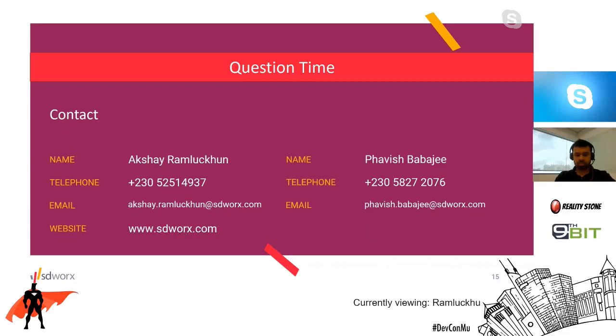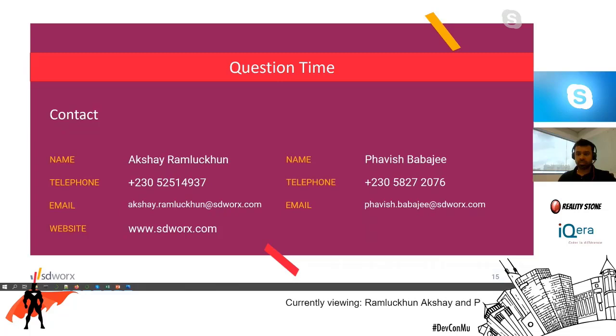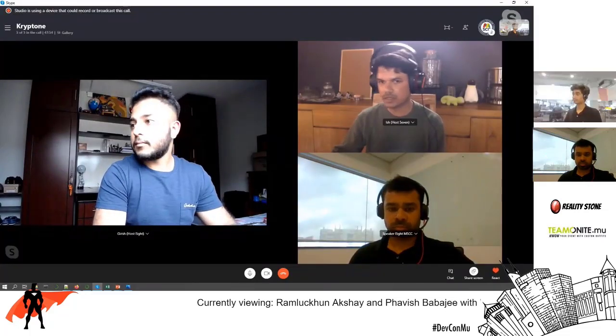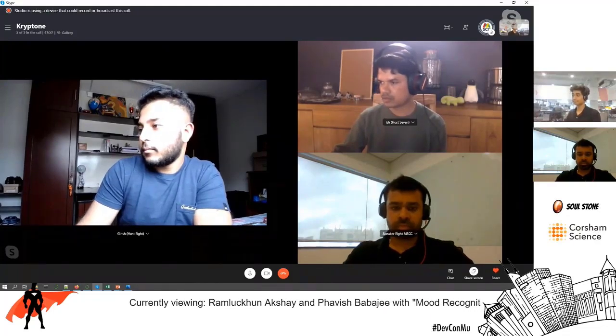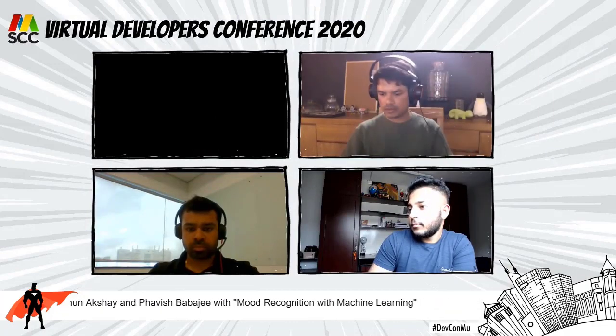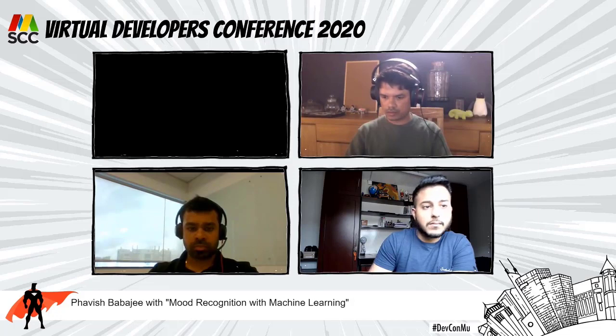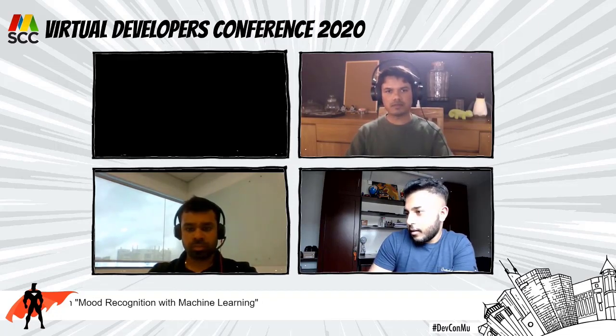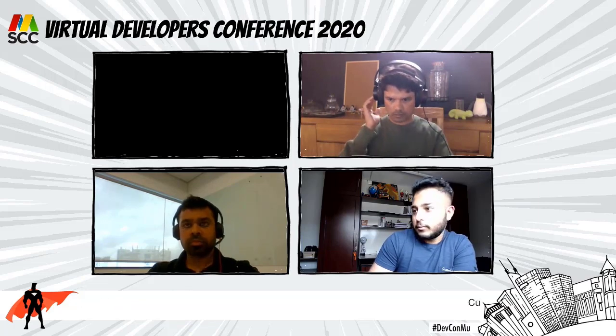We have a question from Christopher. The question is: what is the algorithm being used for the artificial intelligence? It's a convolutional neural net.